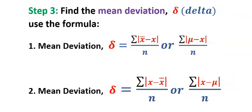Step number three, find the mean deviation. The mean deviation is the summation of the absolute value of the mean minus the score divided by the size of the sample. This can also be used if you use mu instead of x bar.